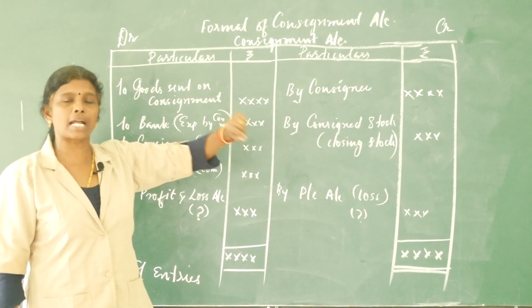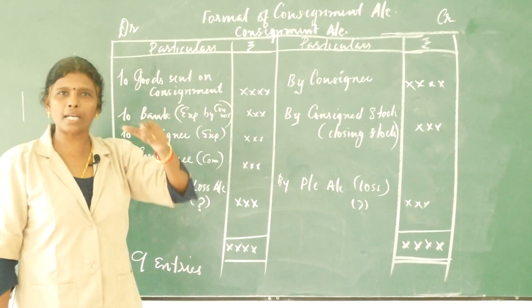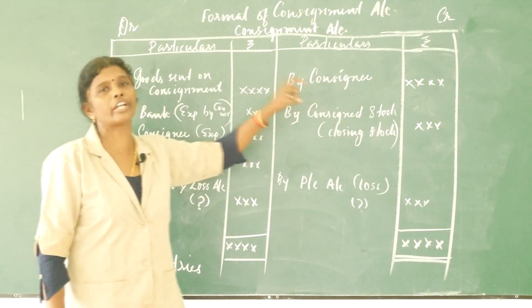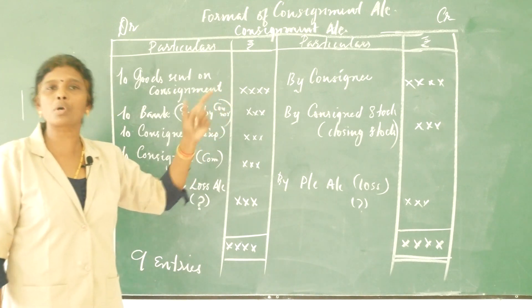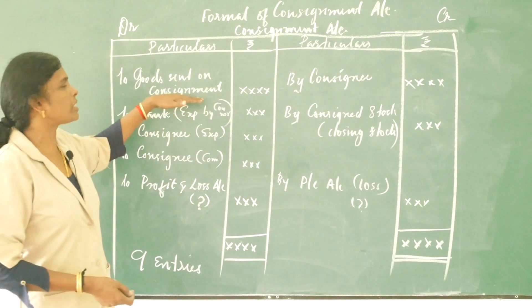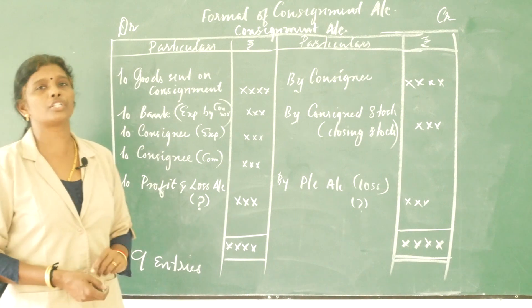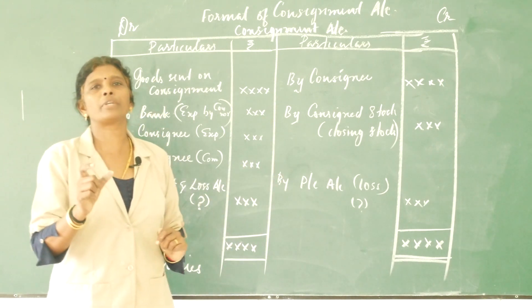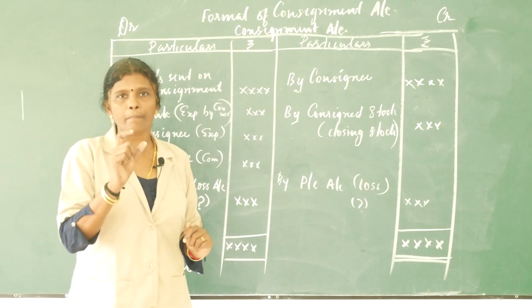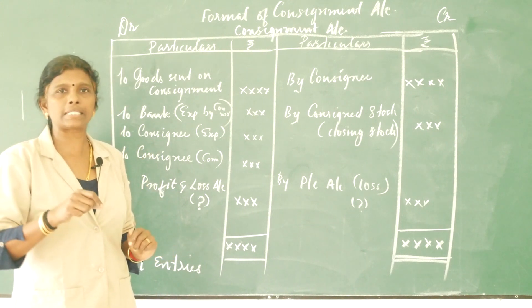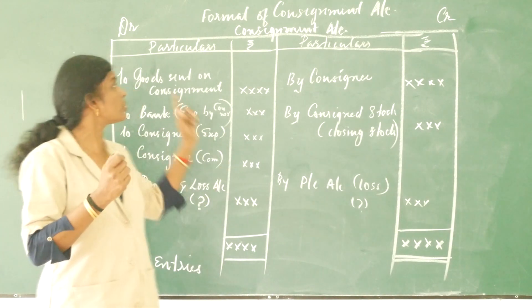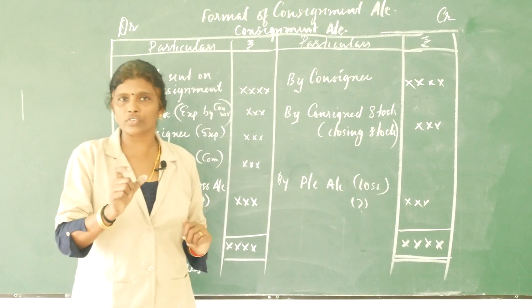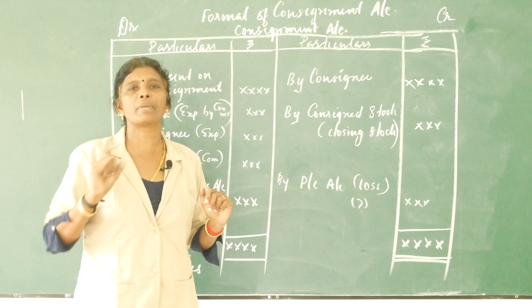There are additional entries: advanced payment made by the consignee to the consignor — Bank Account or Bills Receivable Account debit to Consignee's Account. Then, to close the Goods Sent on Consignment account: Goods Sent on Consignment Account debit to Trading Account.